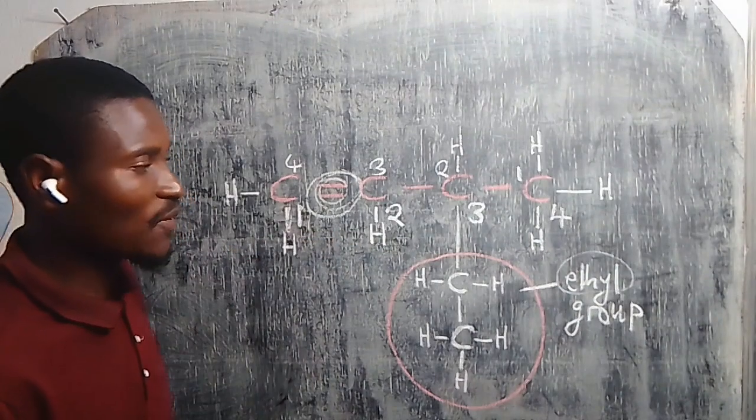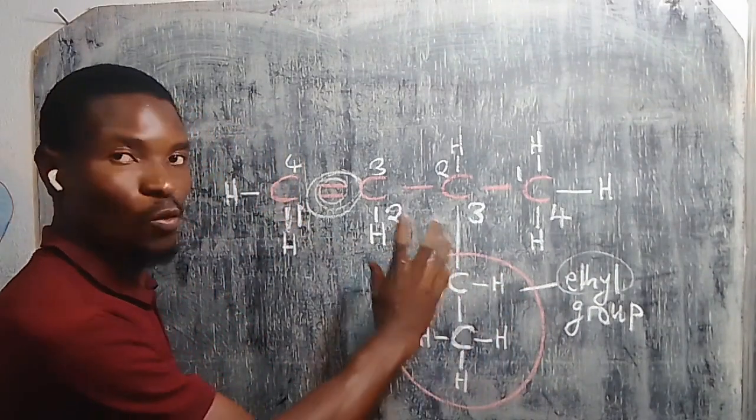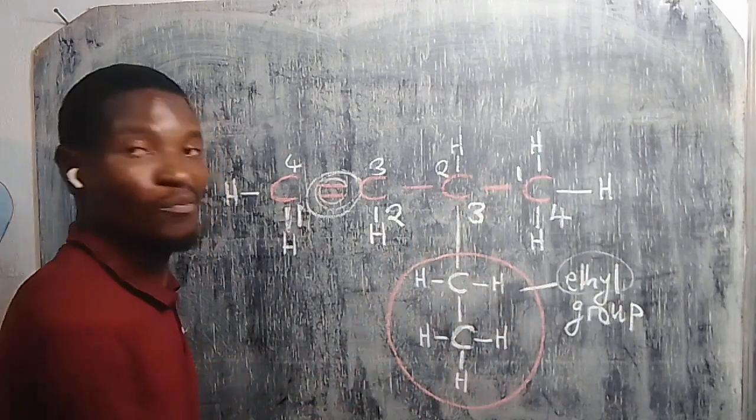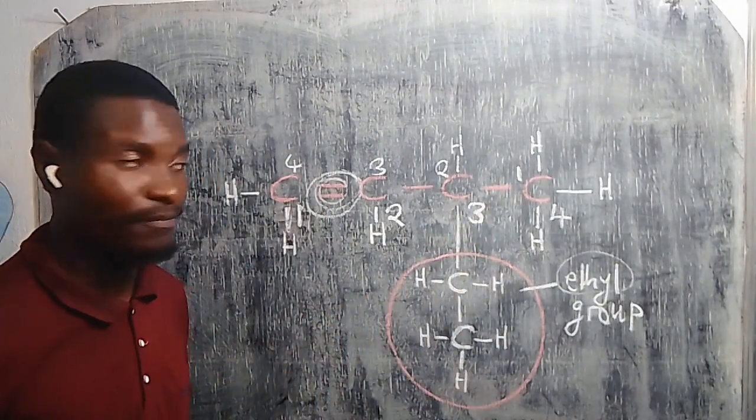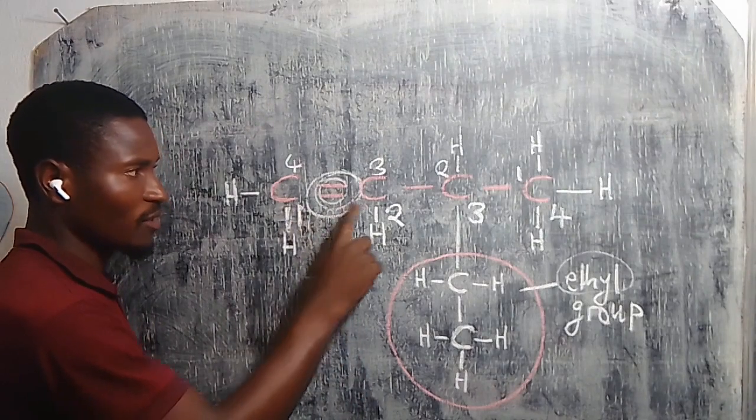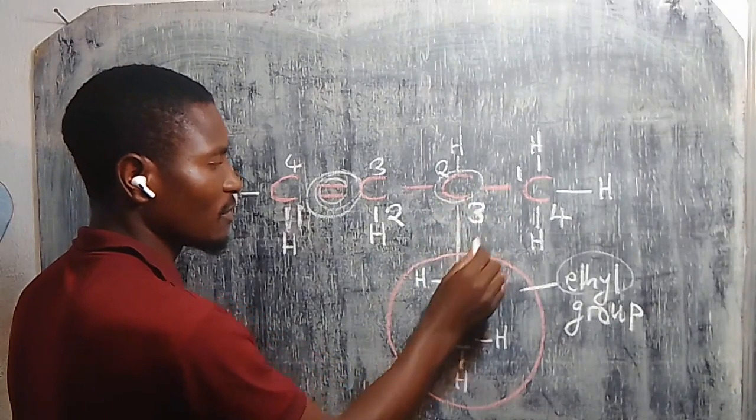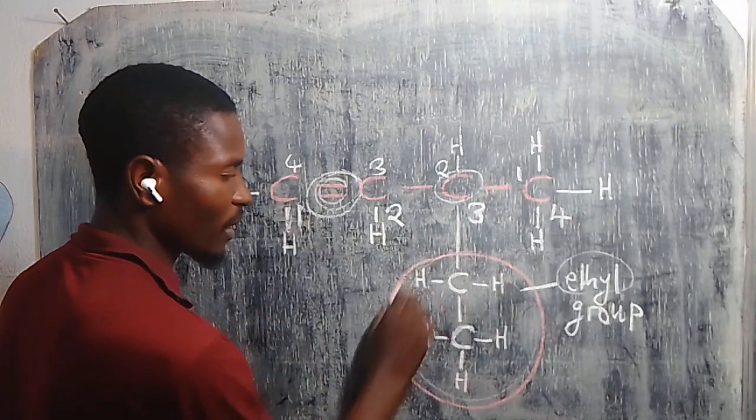We are going to follow the bottom numbering so that you can also identify this ethyl group at what position of the carbon is it branching off from the normal hydrocarbon. So if I follow this one, one, two, three, at carbon number three this is where the branching off is taking place.